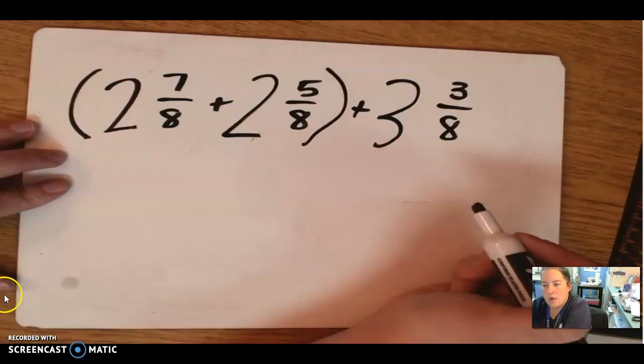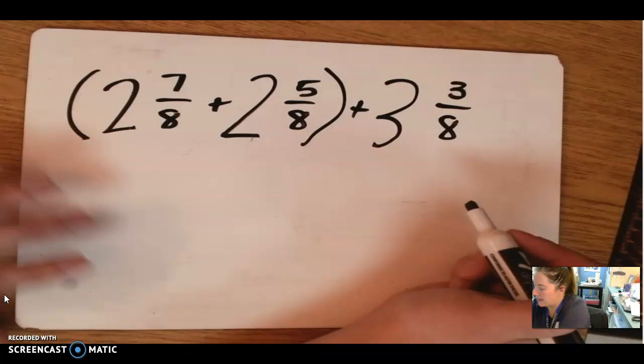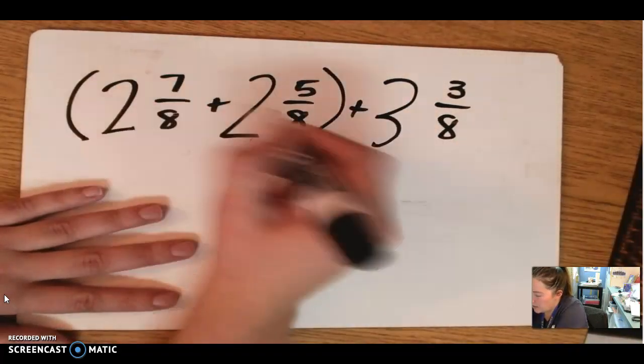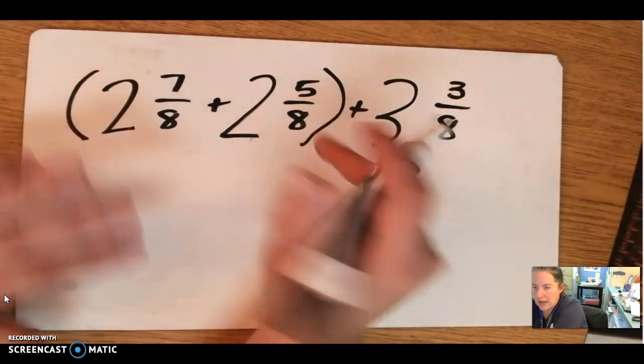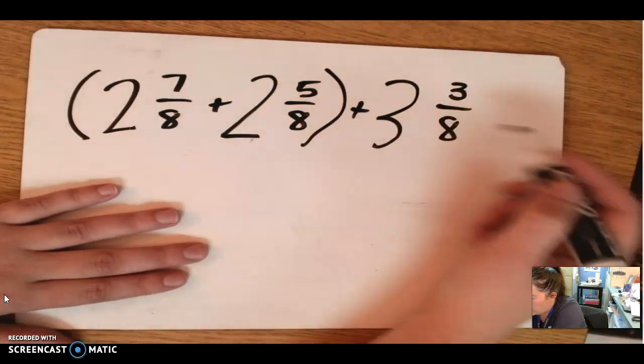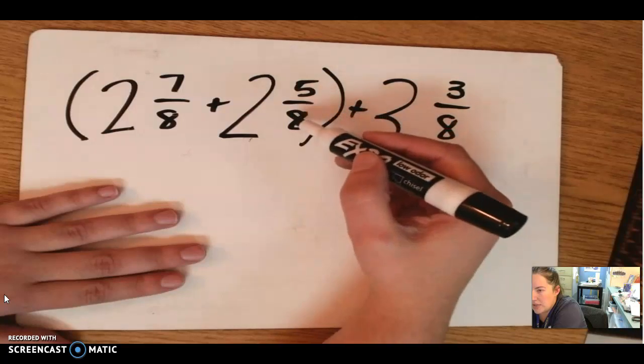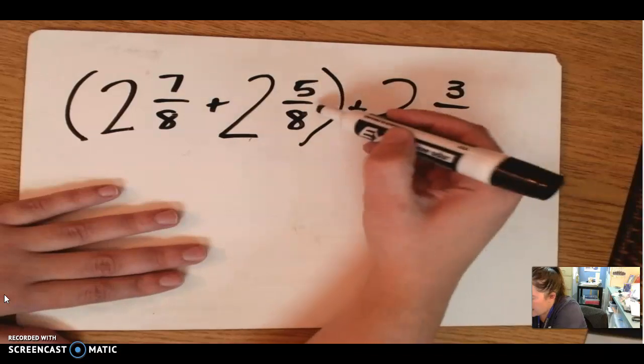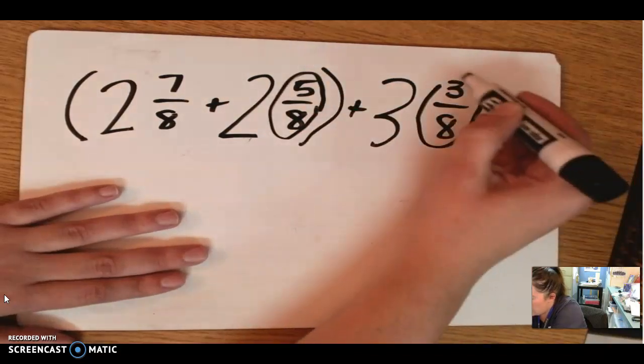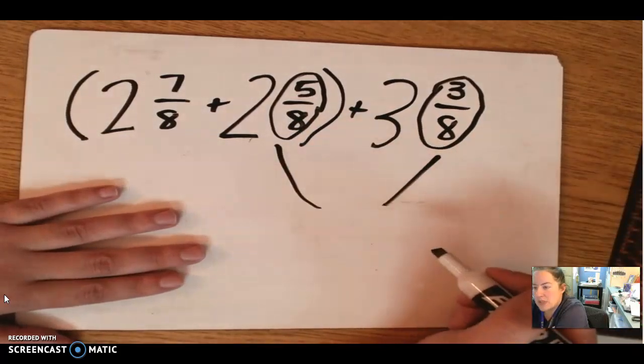Let's try another one. Here's another one. We have 2 and 7 eighths plus 2 and 5 eighths plus 3 and 3 eighths. Normally these parentheses tell you that we're supposed to add these ones first, but with addition, we don't necessarily have to follow that, because instead of adding those two first, I'm going to look to see what I can make a whole. So I'm looking to make 8 eighths somehow, because my denominator is eighths. Well, if I add 5 eighths plus these 3 eighths, if I add those together, what's 5 eighths plus 3 eighths?